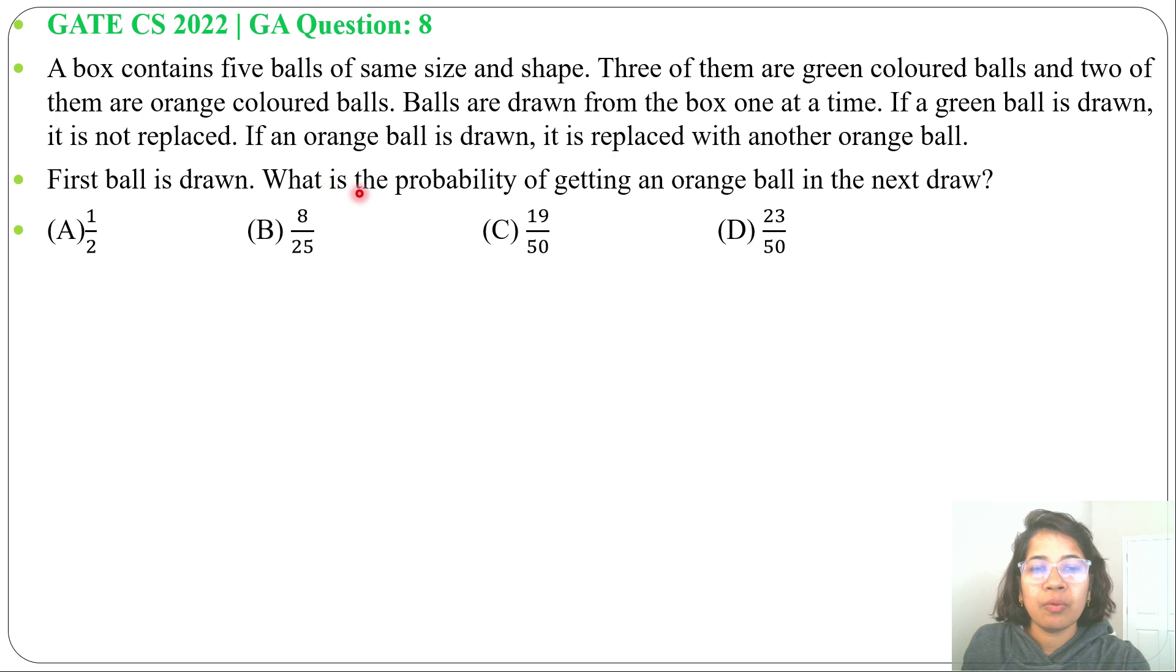First ball is drawn. What is the probability of getting an orange ball in the next draw, and 4 options are given.